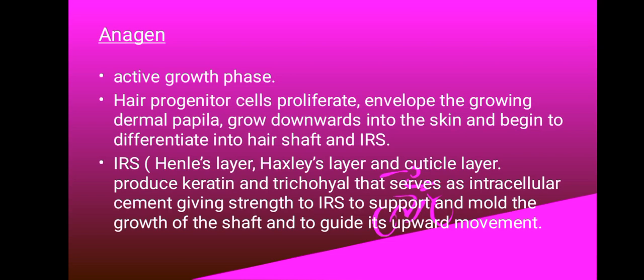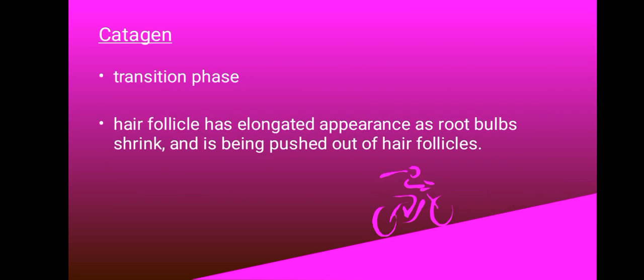That's what happens in the anagen phase. Now we're going to look at the second phase — catagen — which is the transition phase. Here the follicle has an elongated appearance as the root bulb shrinks and is being pushed out of the hair follicle. At the beginning, differentiation and proliferation of hair matrix keratinocytes decreases significantly. Pigment-producing activity of melanocytes stops, and the hair shaft production is completed.